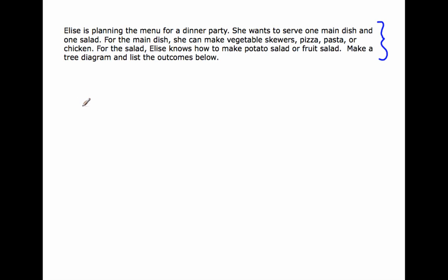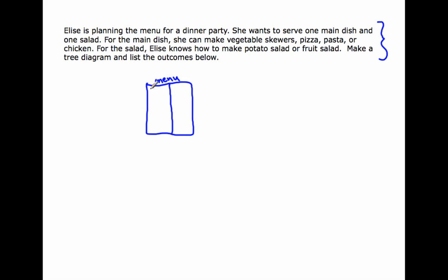Let's make sense of this using a mathematical practice. Elise is planning the menu for a dinner party — you can think of a menu. She wants to serve one main dish and one salad, so we know she's going to have her main dishes here and her salads here.